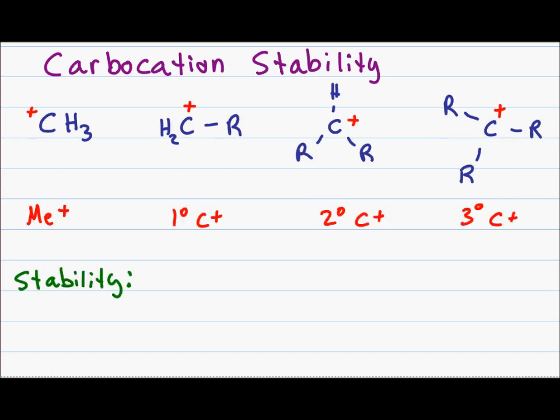Carbon is an atom that is low in electronegativity and prefers to have no charge, positive or negative. Putting the positive charge on the carbon makes it unstable, and the only way to stabilize the carbocation is when it gets help from the groups around it. Many students will memorize carbocation stability, but if you can understand it you'll have a much better chance at applying it to mechanisms.